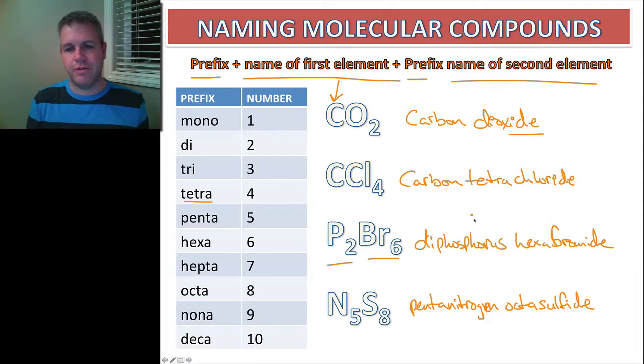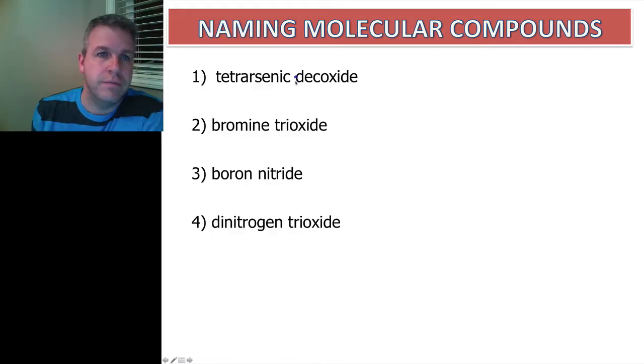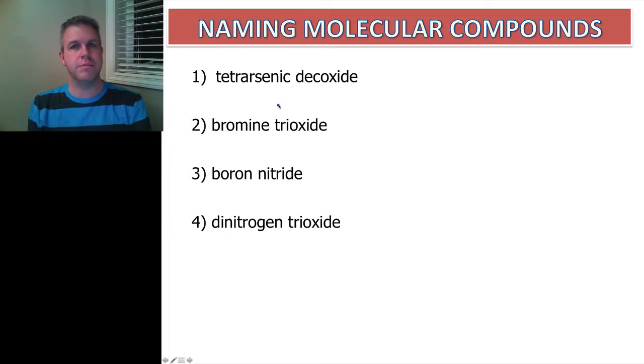So again, we use, when we name the first one, we're going to use the full name of the atom, the last one we are always going to use the anion. So we've just finished looking at how to go from the formula to the name, now we're going to look at going from the name to the formula. This is actually really simple.